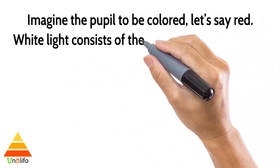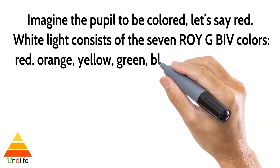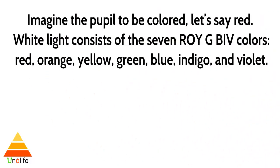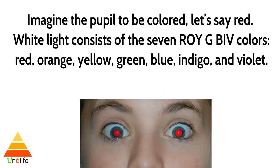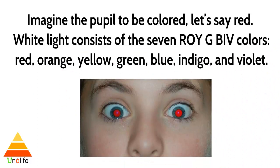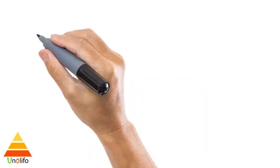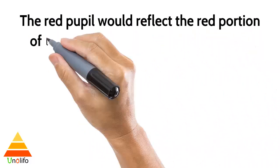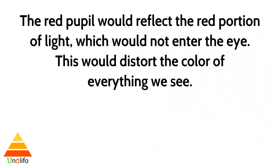Imagine the pupil to be colored — let's say red. White light consists of the 7 ROYGBIV colors: red, orange, yellow, green, blue, indigo, and violet. The red pupil would reflect the red portion of the light, which would not enter the eye. This would distort the color of everything we see.